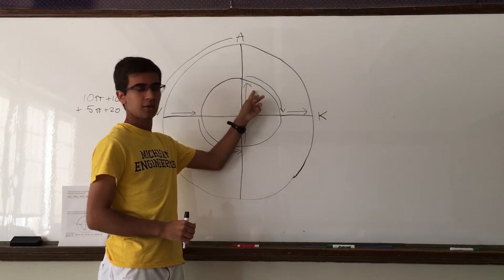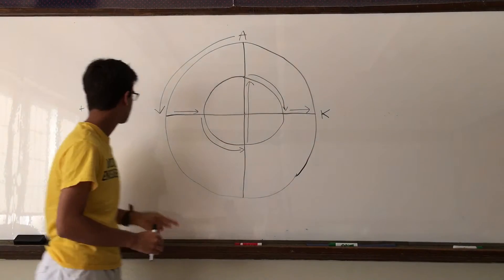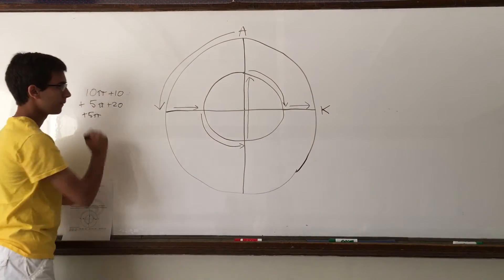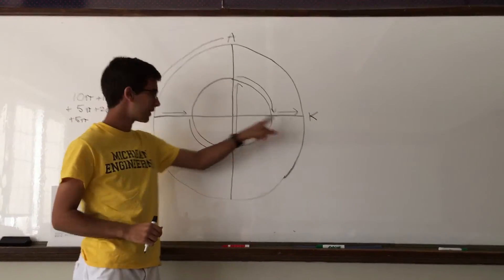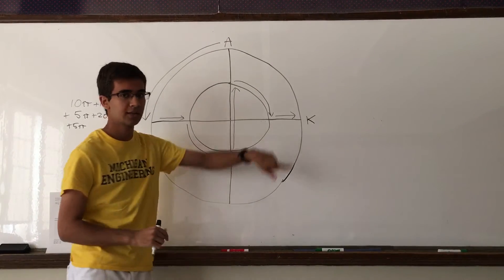Again, this little part is the same value as this because we're going across the quarter of the circumference. So we can just add another 5π. And this arrow will be the same as this arrow, which is just the radius of the outer circle minus the radius of the inner circle, 10 meters.